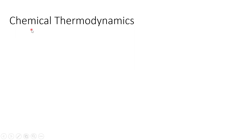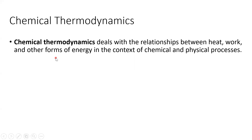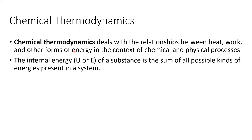We're going to talk about chemical thermodynamics next. When we deal with chemical thermodynamics, we're dealing with the relationship between heat, work, and other forms of energy in the context of chemical and physical processes. When we look at internal energy, which can be symbolized with a capital U or a capital E, it's essentially the sum of all the possible energies present in the system. When we use the word system, we're talking about what it is that we're studying. Everything else outside the system is considered to be the surroundings.